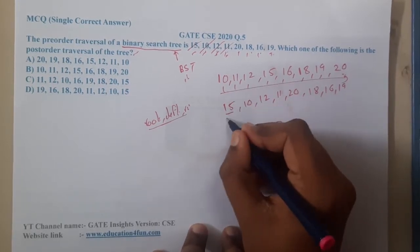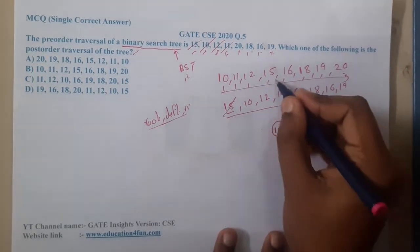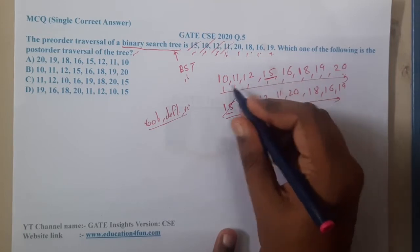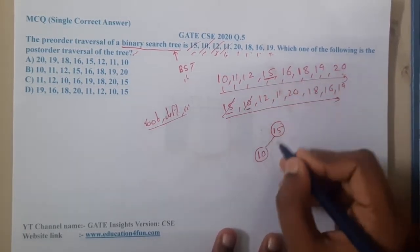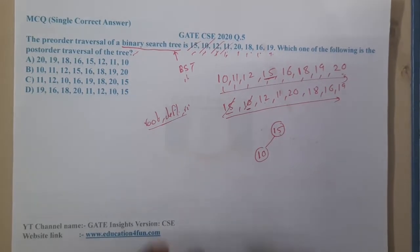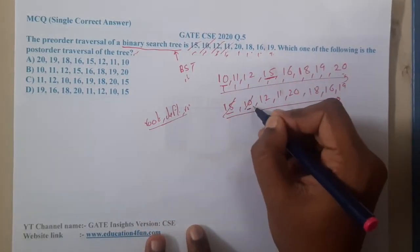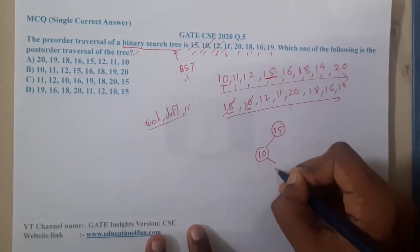Where is 10? To the left of 15, so at left we have 10. Where is 12? 12 is right of 10, so this node is done. Now underline 12. Where is 12? 12 is right of 10, so right of 10 we have 12.